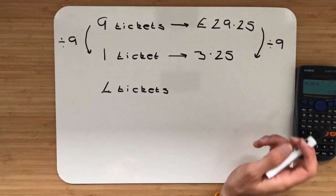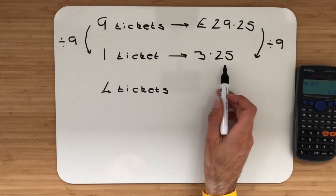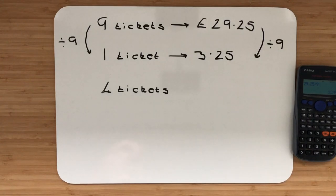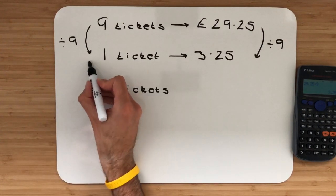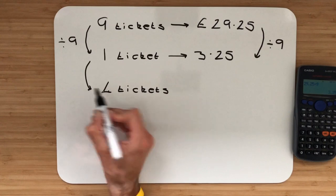Remember this is money so if the calculator doesn't give you two decimal places please make sure you always have two decimal places for money. Okay that might mean adding a zero but it has to be in two decimal places for money. We've now got the value of one ticket. So let's now find four tickets.